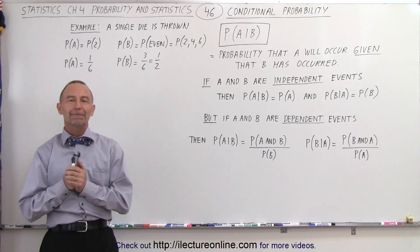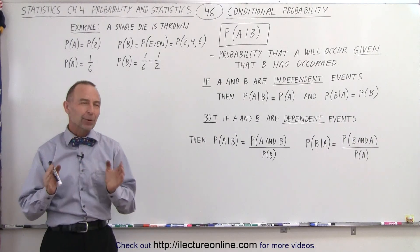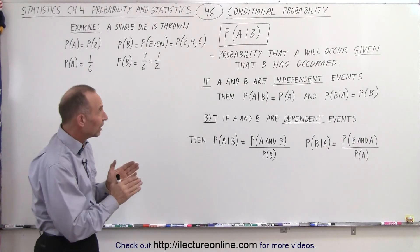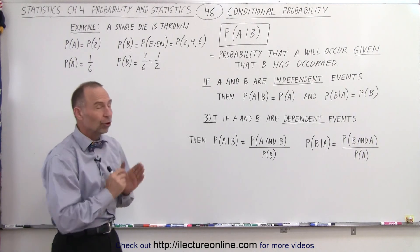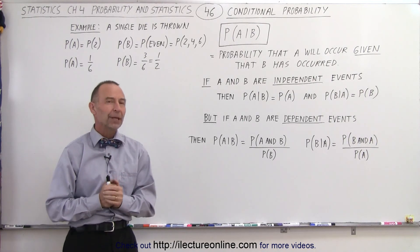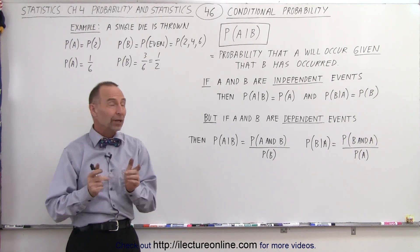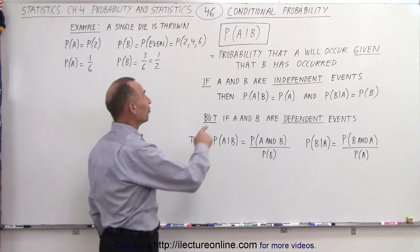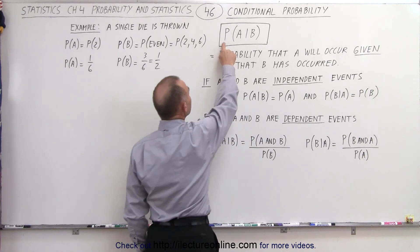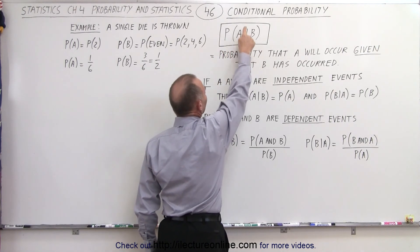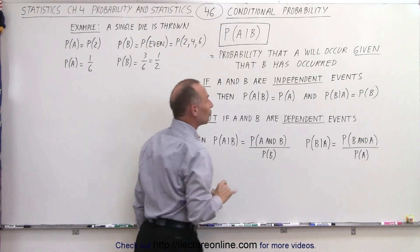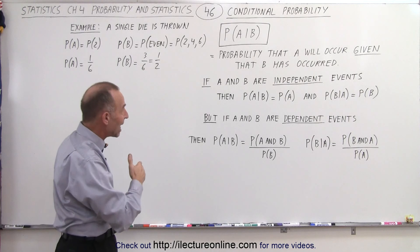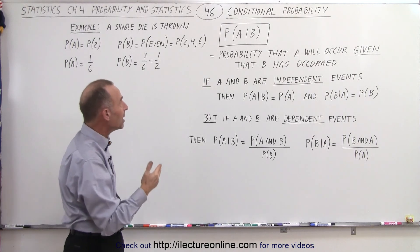Welcome to our lecture online. Here we're going to ask the question: what is conditional probability? The way we write that is as follows — P with an A and a B and a line in between. So we have two events, event A and event B.